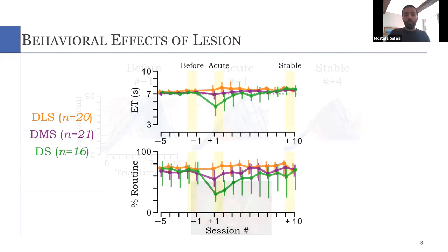At the group level with a large number of animals in each group, we can see that in terms of entrance time at the top and percentage of routine on the bottom, both DLS and DMS animals are basically unaffected. So after the lesion, they perform the task similarly. However, in the group with largest lesions, the DS group, we see a transient effect immediately after the lesion, but animals tend to recover after a few more sessions.